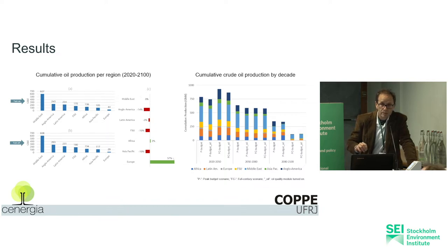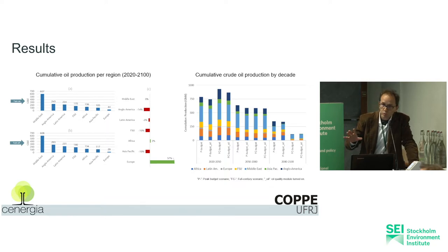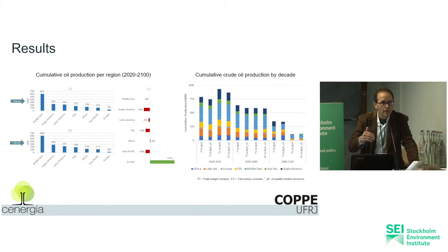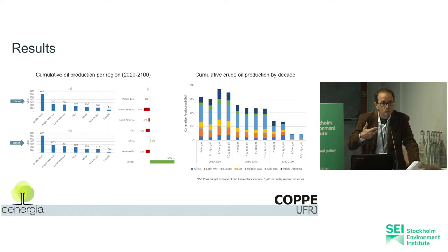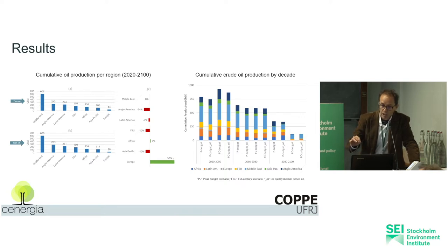First of all, we ran our model without expressing the oil quality and the typologies of refineries. Then we ran our model with the oil model switched on, to show whether it is important to represent the properties of the oil. It is different to see the stranded resources. For example, we have acid crude — oil refiners are not all prepared to process this type of crude. They need to invest to revamp in order to be prepared to process it. By running the oil model on and off, we were able to see if this is important.